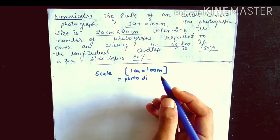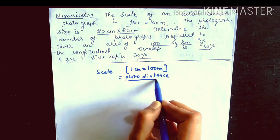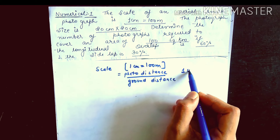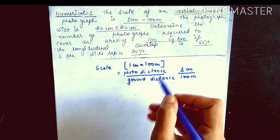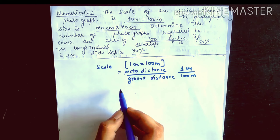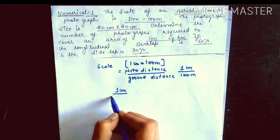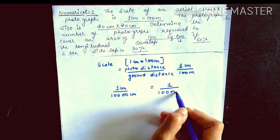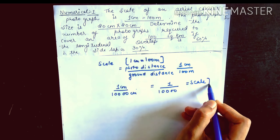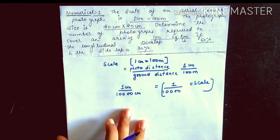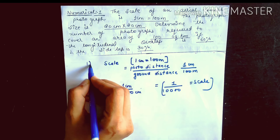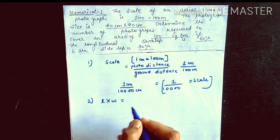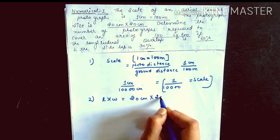Scale equals photo distance divided by ground distance. Photo distance is given as 1cm and ground distance is given as 100m. Converting to the same units, 1cm = 10,000cm, giving us the representative fraction scale as 1:10,000. The photograph size (small l × small w) is given as 20cm × 20cm.